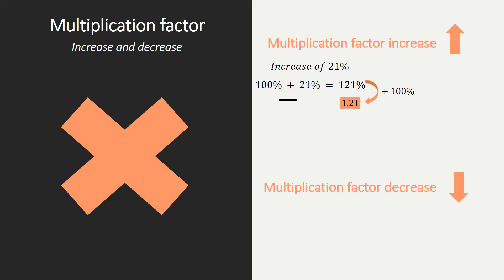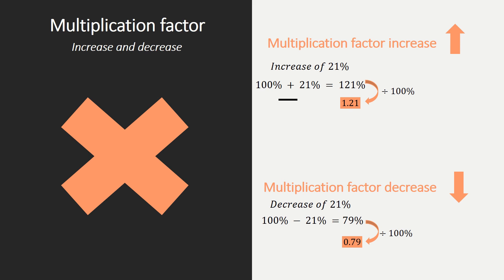How about the multiplication factor for a decrease? It decreases when the price is going down. That means with a decrease of 21%, we need to subtract 21% from our 100%, so 100% minus 21% is 79%. We need to divide this by 100, so we get 0.79. This is our multiplication factor — you can now multiply this factor by the number you want to calculate the decrease of, and then we have our new value.